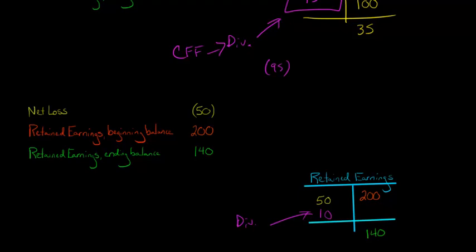So we had dividends that were issued of $10, and again, that's going to go on the cash flow from financing section. We're going to have something that says dividends, and it will be $10 cash outflow.